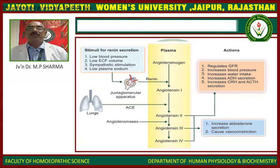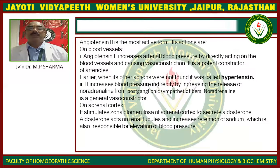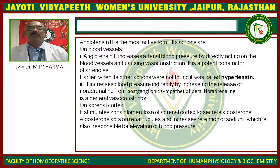Angiotensin-2 increases blood pressure indirectly by increasing the release of noradrenaline from post-ganglionic sympathetic fibers. Noradrenaline is a general vasoconstrictor.